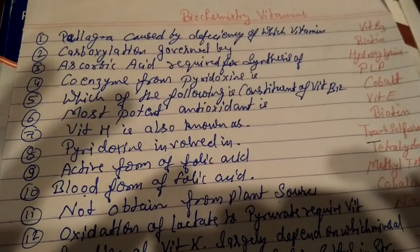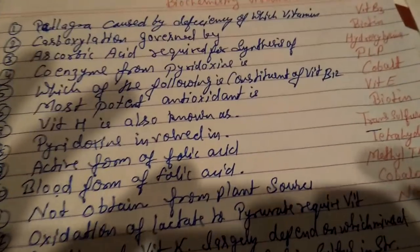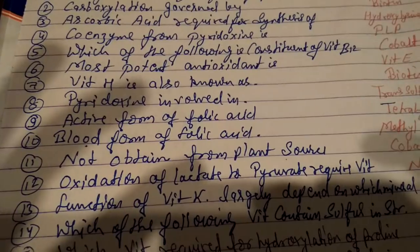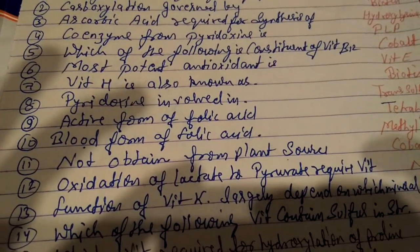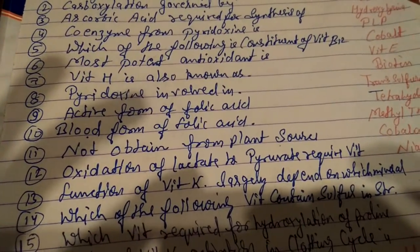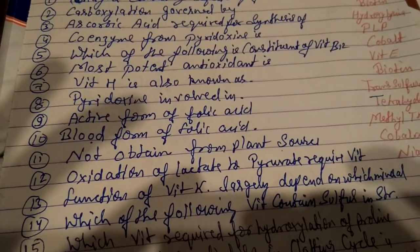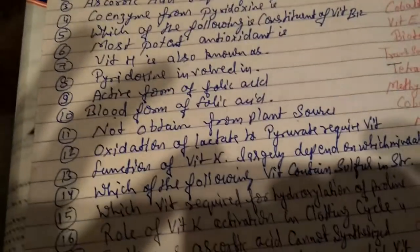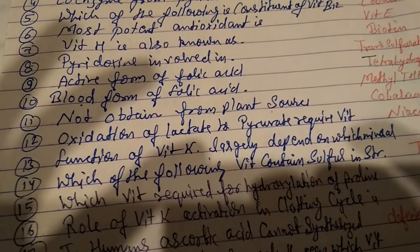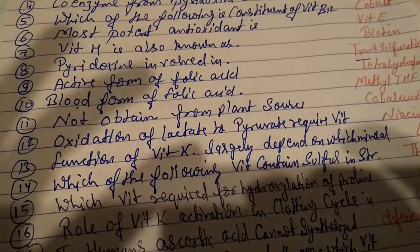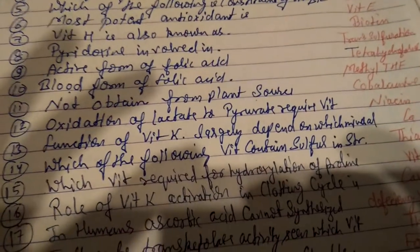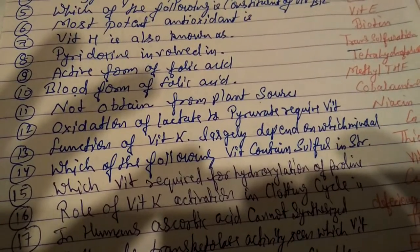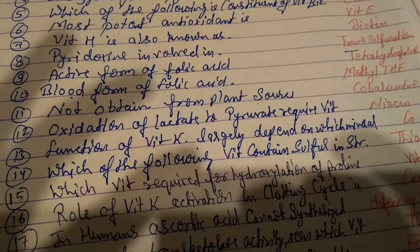Pyridoxin is involved in trans-sulfuration. The active form of folic acid is tetrahydrofolate. The blood form of folic acid — question number ten — is methyl-tetrahydrofolate. Question number eleven: vitamin not obtained from a plant source is cobalt (Vitamin B12).